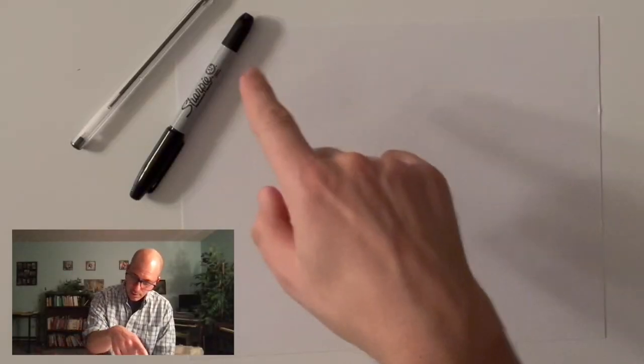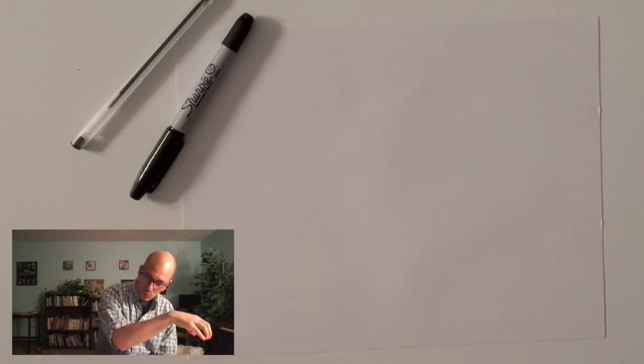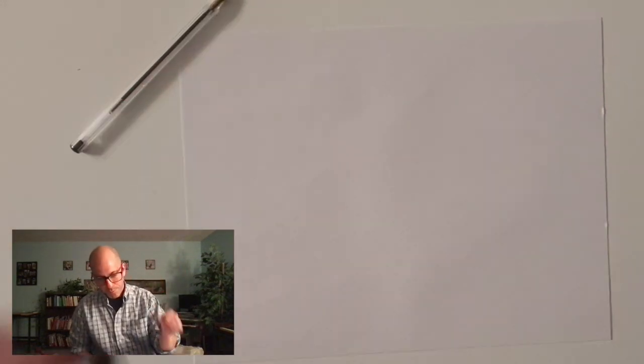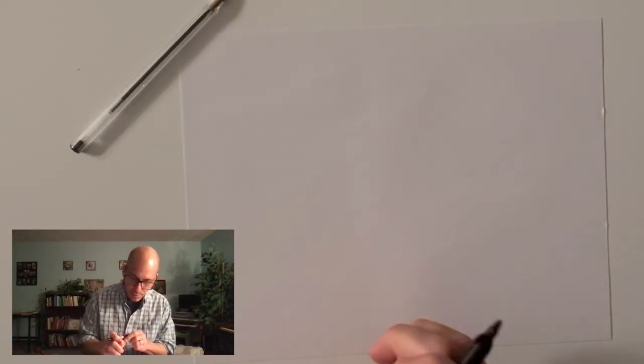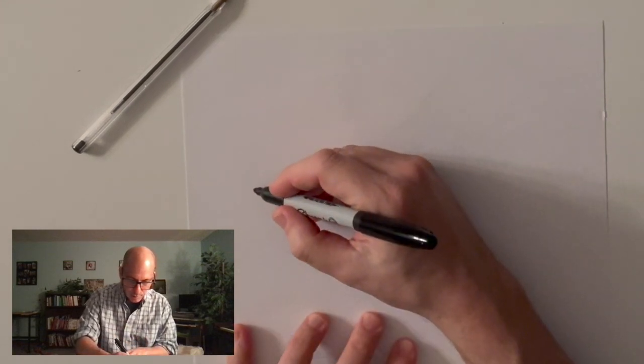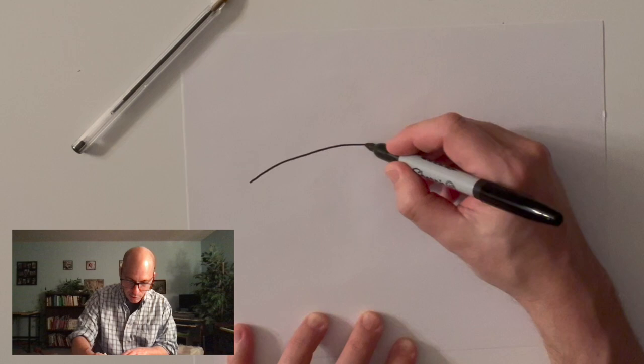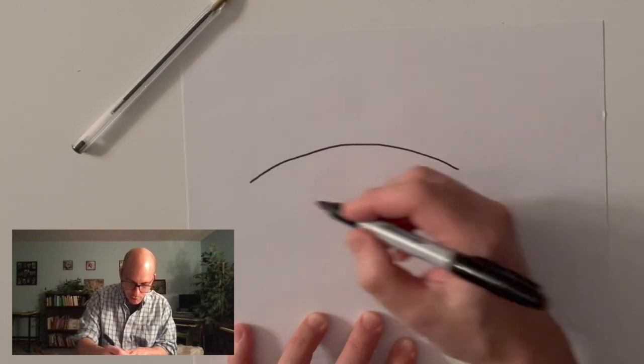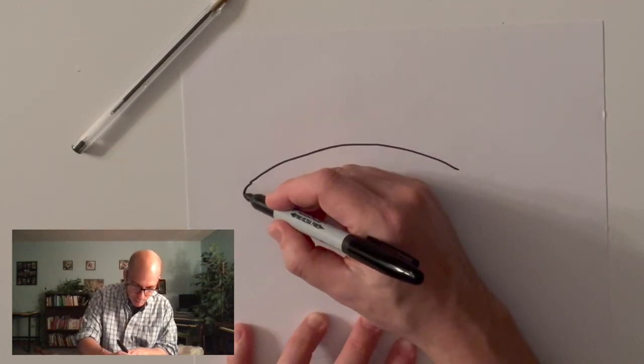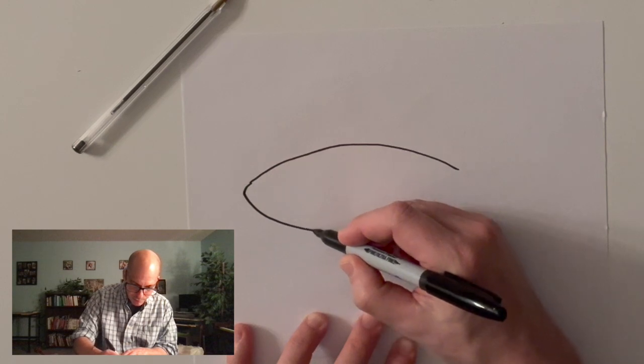Hey buddy, we're gonna draw a submarine now. Ready? Here's my paper oriented landscape because my submarine's gonna be going across. I've got my thick pen here, so when I draw a submarine I kind of draw like a cigar shape or almond shape or kind of bullet shape.